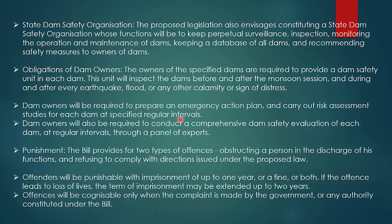What punishment is provided? If these requirements are breached, the bill provides for two types of offences: obstructing a person in the discharge of functions, and refusing to comply with directions issued under the proposed law. Offenders will be punishable with imprisonment of up to one year, or a fine, or both. If the offence leads to loss of lives, the imprisonment may be extended up to two years.